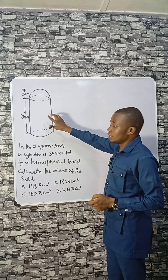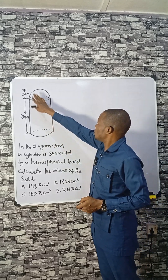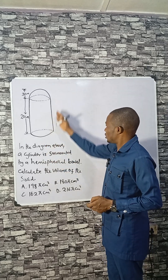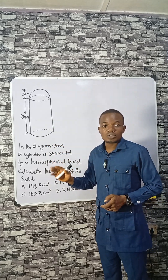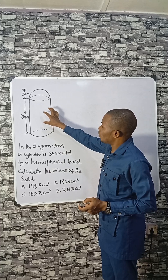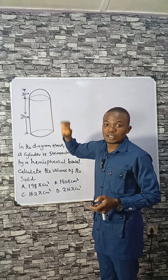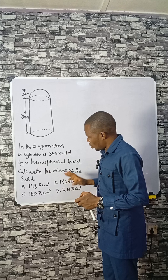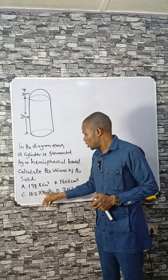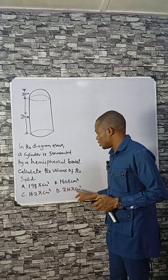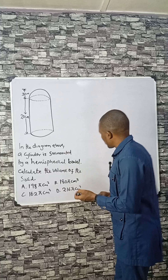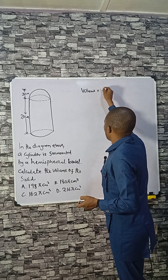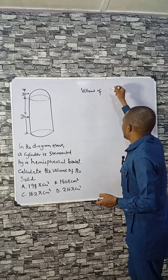This diagram shows a cylinder being surmounted by a hemispherical bowl. We are asked to find the volume of the solid. What we need to do is first find the volume of the cylinder, then add it to the volume of the hemisphere to get the answer. The answers here are given in terms of pi, so let's find the volume of the hemisphere.